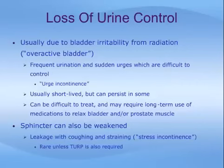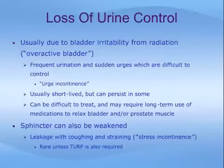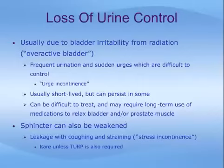Urine control problems after brachytherapy are usually due to bladder irritability from radiation effects, causing what is called an overactive bladder. This results in frequent urination and sudden urges that are difficult to control, leading to urge incontinence. While these symptoms are usually short-lived, they can persist in a few men and can be difficult to treat, requiring long-term medications to relax the bladder and prostate muscle. The urinary sphincter or control valve muscle can also be weakened by radiation; in severe cases, it could cause leakage with coughing and straining called stress incontinence, though this is rare unless a prostate resection has also been required.